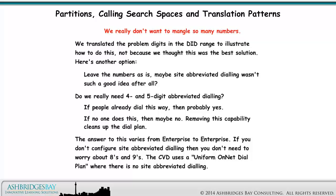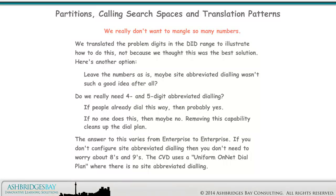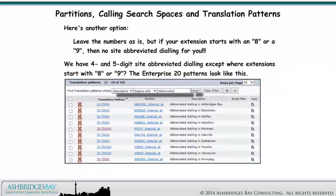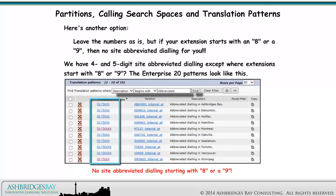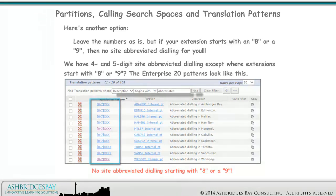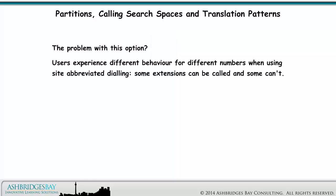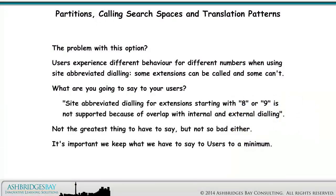The CVD uses a uniform on-net dial plan where there is no site abbreviated dialing. Here's another option: leave the numbers as is, but if your extension starts with an 8 or a 9, then no site abbreviated dialing for you. We have 4 and 5 digit site abbreviated dialing, except where these patterns start with an 8 or 9. Our patterns look like this — no site abbreviated dialing starting with an 8 or a 9. The problem with this option: users experience different behavior for different numbers. What are you going to say to your users? Site abbreviated dialing for extensions starting with 8 or 9 is not supported because of overlap with internal and external dialing. Not the greatest thing to have to say, but not so bad either. It's important we keep what we have to say to users to a minimum.